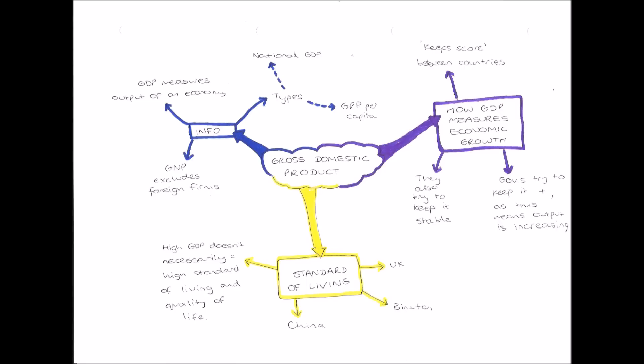So if GDP increases, that means the output of an economy increases, it's producing more. Therefore economic growth has occurred because economic growth is an increase in the productivity of an economy when an economy produces more.